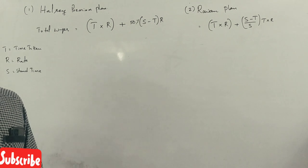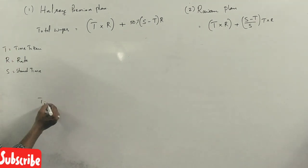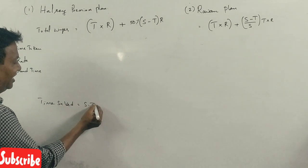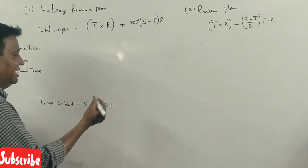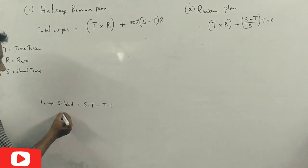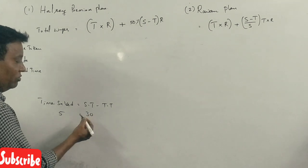Time saved equals standard time minus time taken. So time taken equals standard time minus time saved. That gives us 30 minus 5, which equals 25 hours.